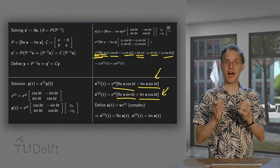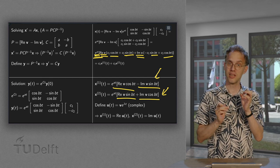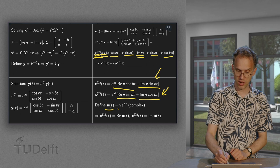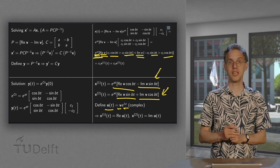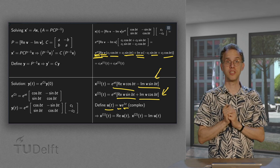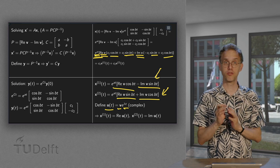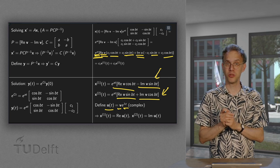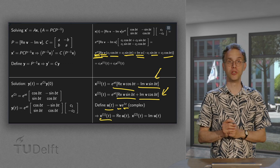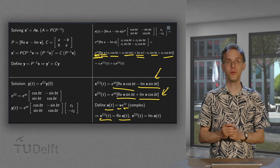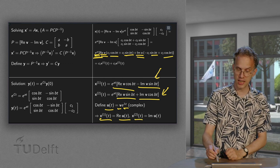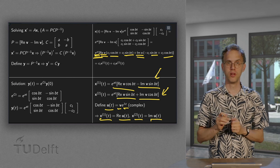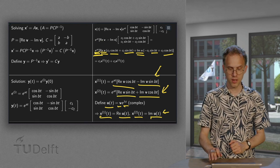So how can we memorize the solution easily? We define a complex function u(t) = V · e^(λt), where V is the complex eigenvector and e^(λt) is also complex. This is easy to remember. It turns out that the first independent solution x1(t) is the real part of u, and the second independent solution x2(t) is the imaginary part of u. Let's verify why this is true.